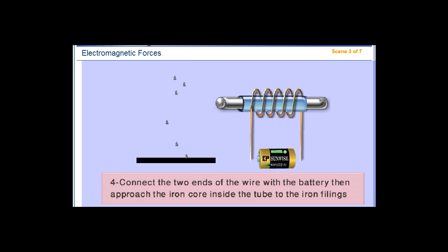Connect the two ends of the wire with the battery, then approach the iron core inside the tube to the iron fillings.